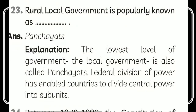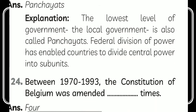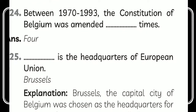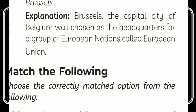Rural local government is popularly known as panchayat or panchayati raj. The lowest level of government — local government — is called panchayats; federal division of power has enabled countries to devolve central power into subunits. Between 1970 and 1993, the constitution of Belgium was amended four times. Brussels is the headquarter of the European Union. The capital city of Belgium, Brussels, was chosen as the headquarters for the group of European Union nations.